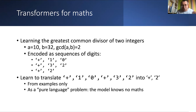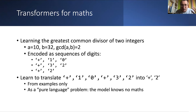When I say 10 is encoded as 'plus 1, 0', the digits are just for our convenience. For the transformer, the words have no meaning — they're just symbols indexed in a vocabulary table. I could replace all those words with 'banana', 'plum', 'apple', and it wouldn't change anything for the model.